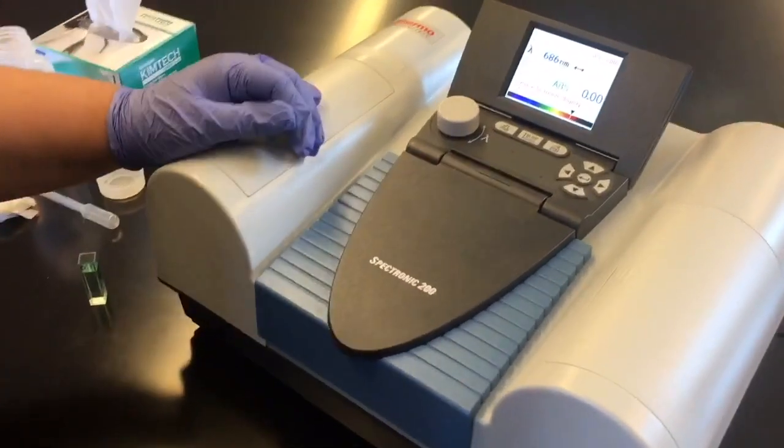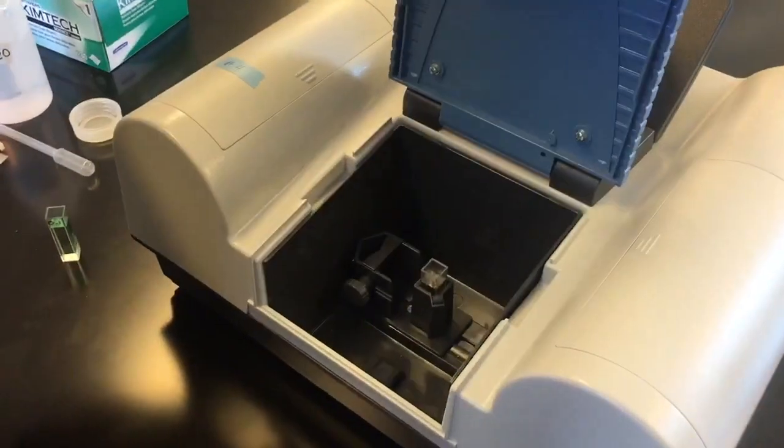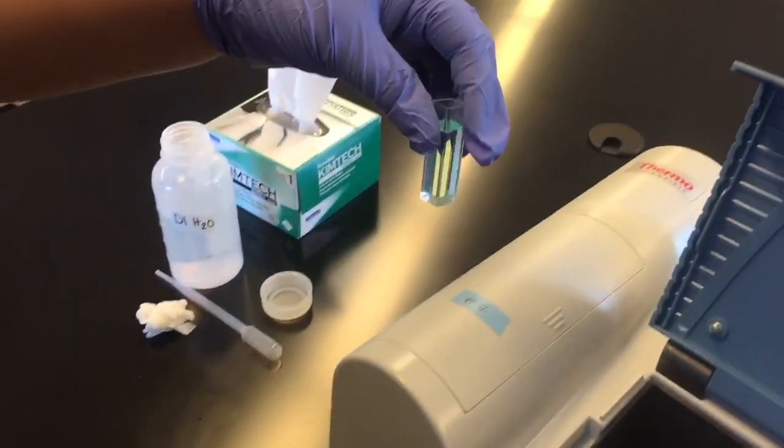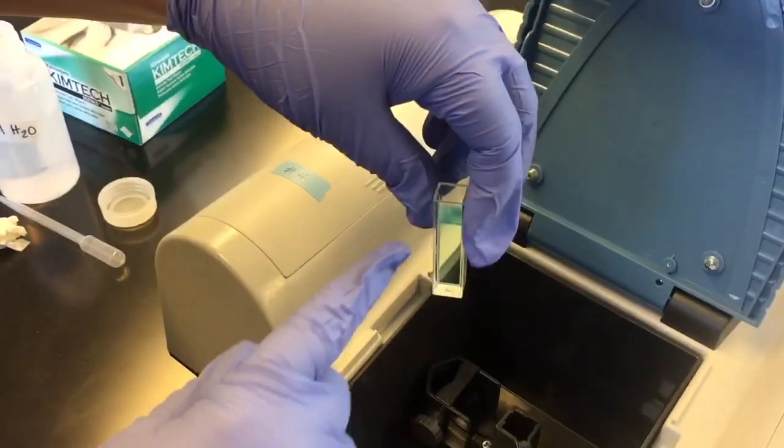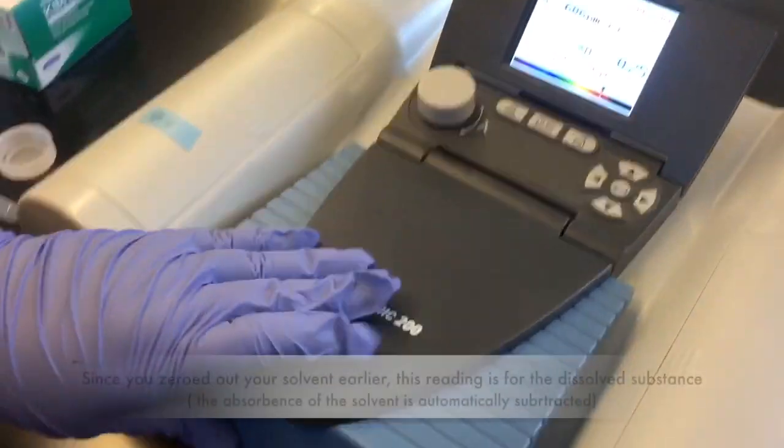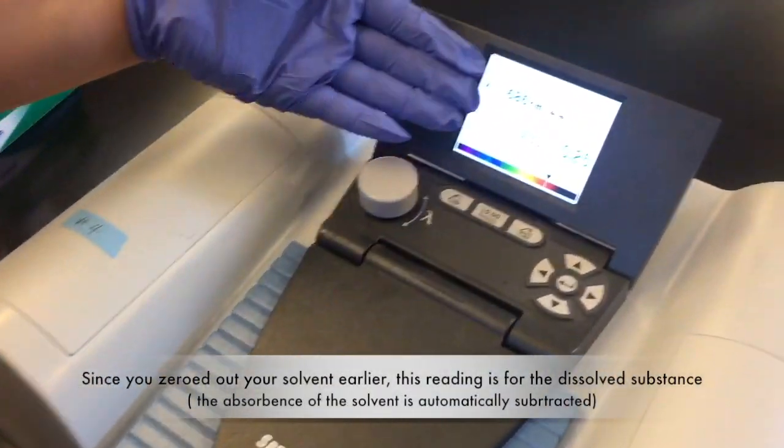Now that you have zeroed out your spectrometer, you're going to open the lid once more and take out your DI water. You're going to take the sample cuvette that you have filled up to the line below the arrow, put it in, and close the lid. Then you're going to get your result.